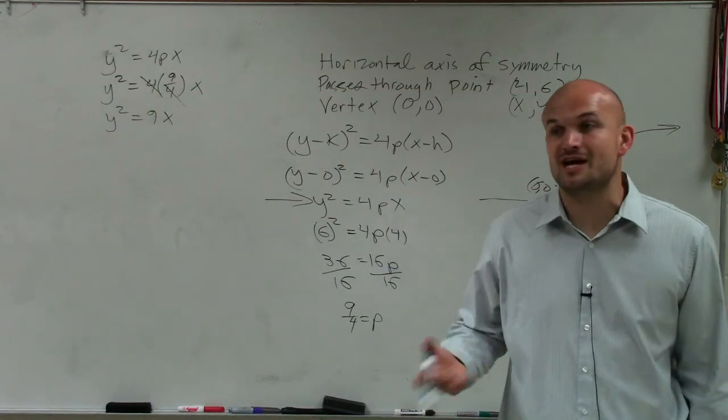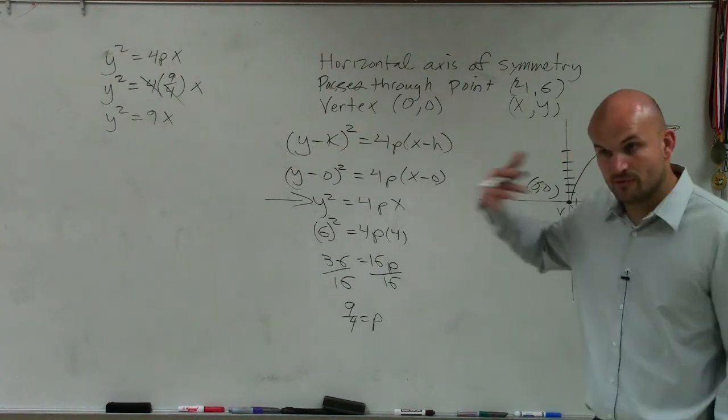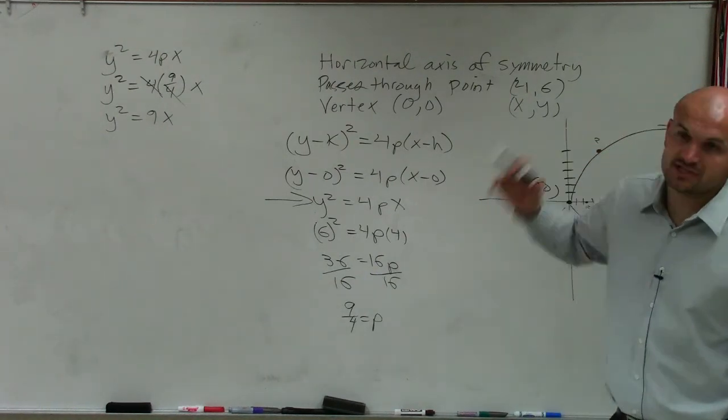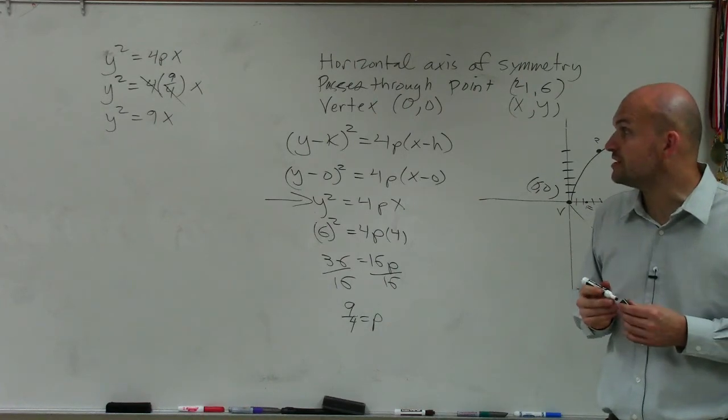Again, let's look back to Josh. Josh, was our p positive? Yes, so we know we made a good step there. The fours divided out. And we're just left with the standard form of the equation is y squared equals 9x.